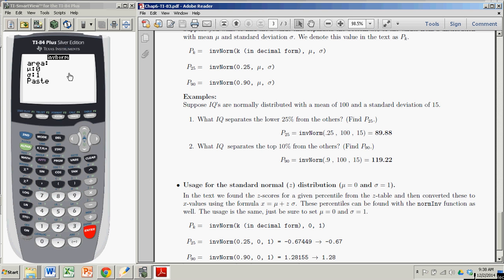So area is the area to the left of the value I'm seeking. So if I'm looking for P sub 25, I put 0.25 in for area. So I'll go 0.25, hit Enter. The mean is 100, and the standard deviation is 15. And it says paste, which means you're going to paste that into this inverse norm function. So I hit Enter.